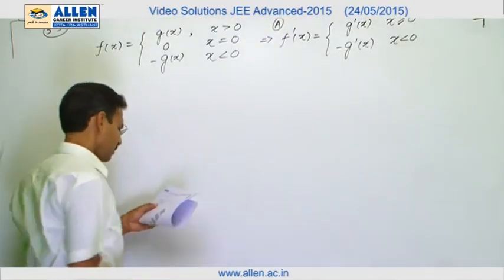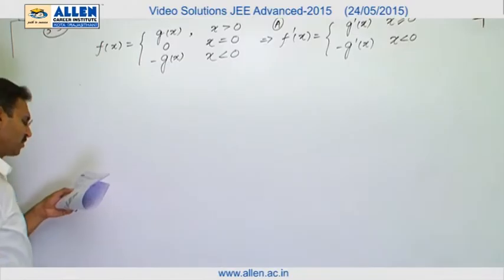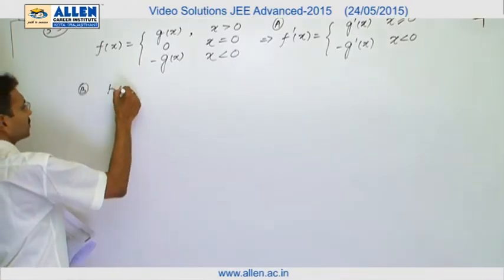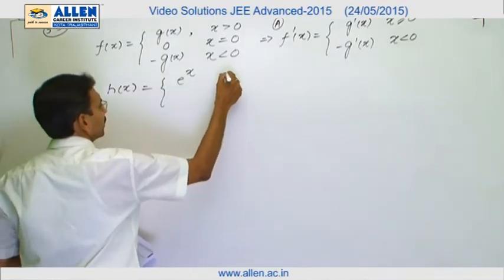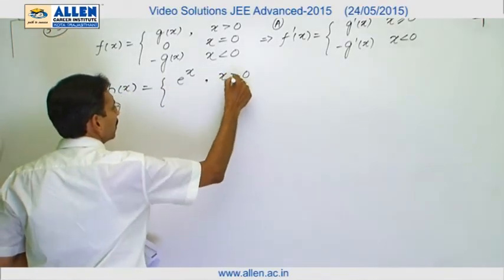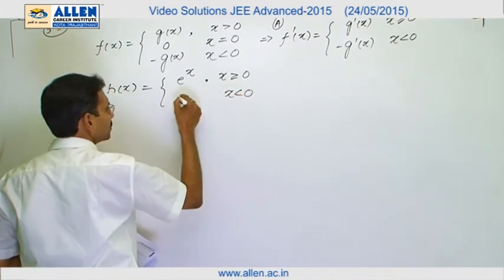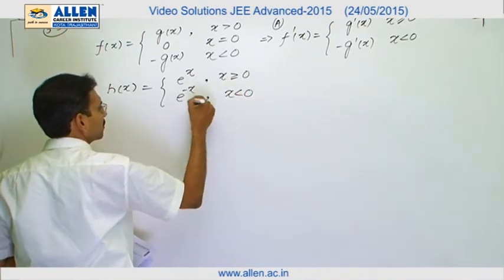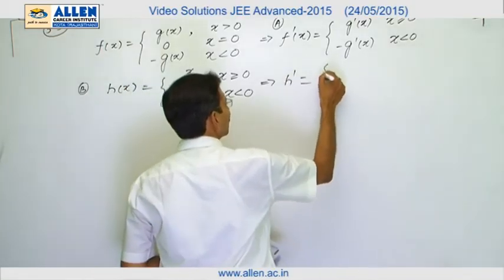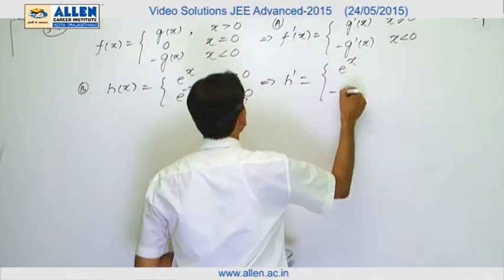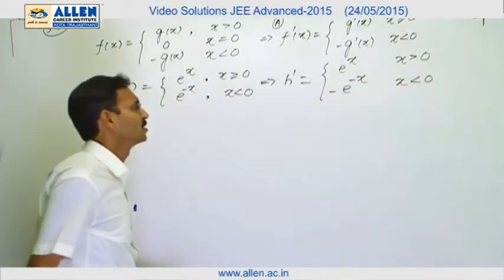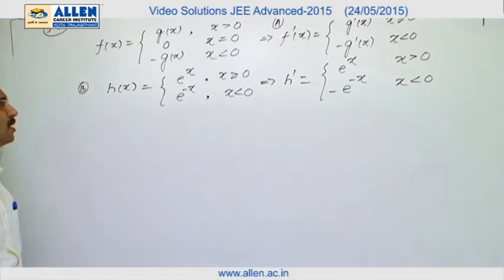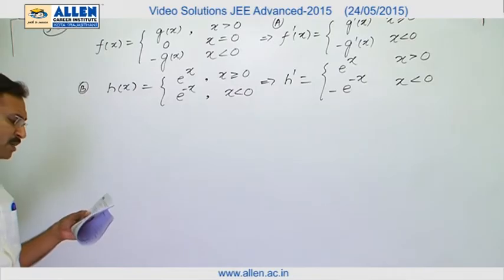Now, for option b, h is differentiable. We will define function hx which is e raised to the power x for x greater than 0 and for x less than 0 it is e raised to the power minus x. We can see h dash is e power x and minus of e power minus x. This is for greater than 0, this is for less than 0. At 0 you can see RSD and LSD are both different.